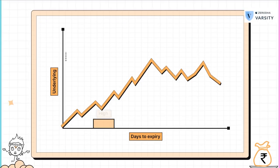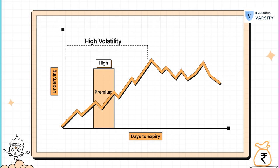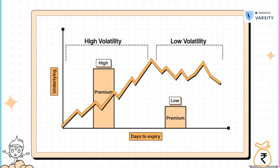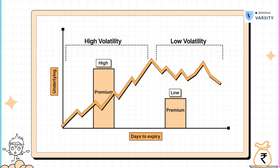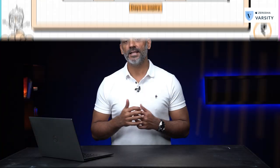As an option seller, if the volatility is higher, then I know that the chance of the option I'm selling expiring in the money is very high. Therefore, as an option seller, I'll always expect a higher premium if the volatility is higher. Likewise, if the volatility is lower, I know that the likelihood of the option expiring in the money is very low, and hence I would expect a lower premium.